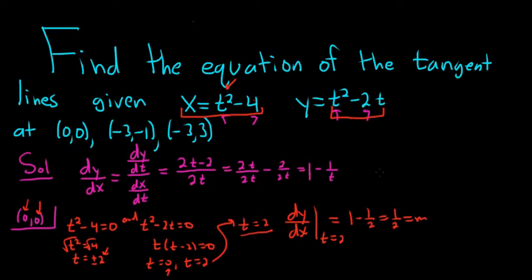So now we can find the tangent line. To find the tangent line, we use the formula y minus y1 equals m times x minus x1. So it's y minus 0 equals 1 half times x minus 0. So y equals 1 half x. That would be the tangent line at 0, 0.